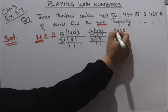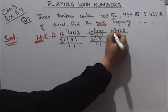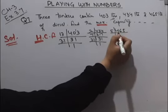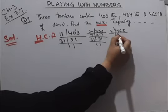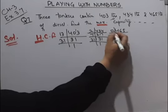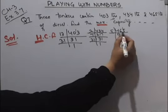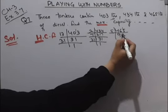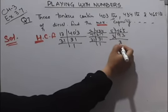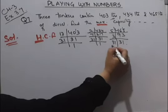Now 465. This will go by 5. 5 nines 45, 1 carry. 5 threes 15. Then 93 will go by 3. 3 threes 9, 3 ones 3. 31, one more time.